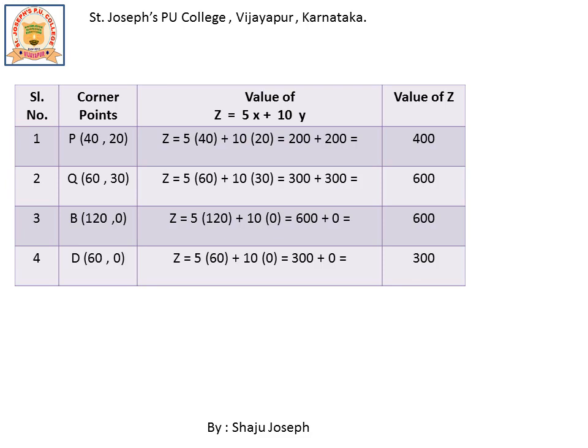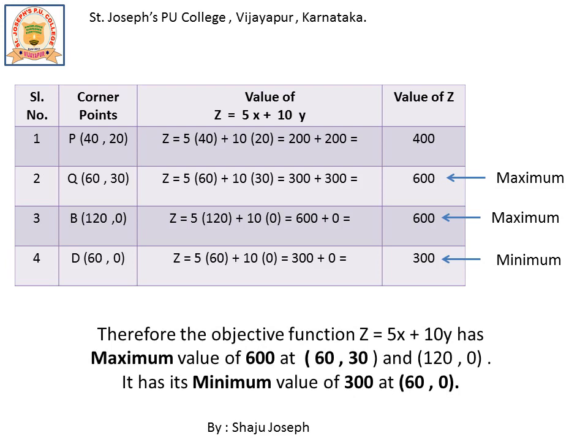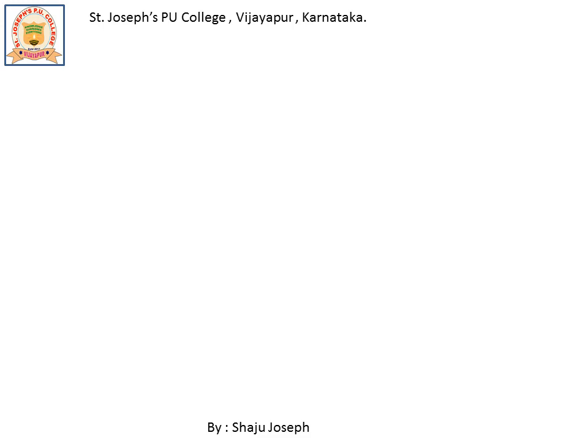They have asked us to both maximize and minimize the objective function. The maximum value is 600, which is achieved at two different points: (60, 30) and (120, 0). The minimum value is 300, achieved at only one point: (60, 0). Therefore, the objective function Z equals 5x plus 10y has a maximum value of 600 and a minimum value of 300. If you have missed any previous solutions, click on the playlist or subscribe to the channel and click the bell icon for regular notifications. Thank you.